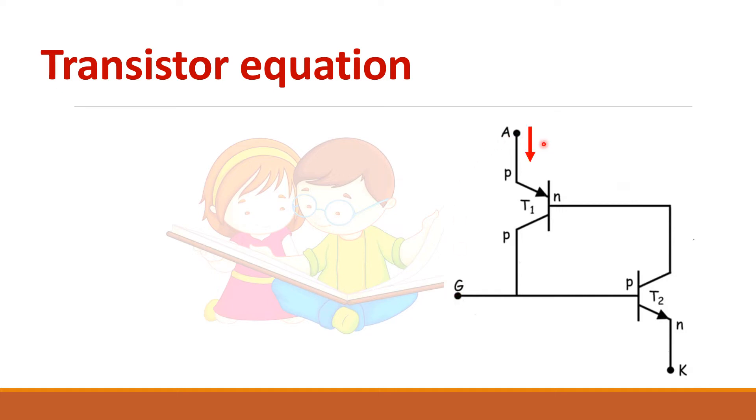So what is anode current? So anode current is here. So this is nothing but the emitter current of this transistor T1. And this is the collector current of transistor T1. And this is the base current of transistor 1. So it is a PNP transistor. So arrow current direction is this one.